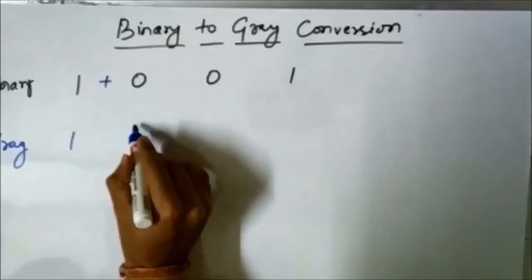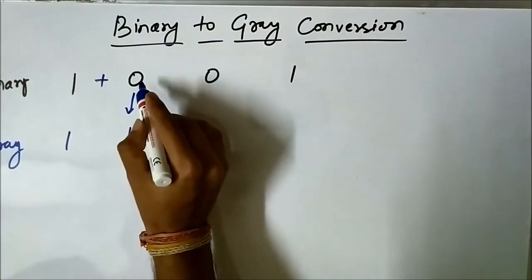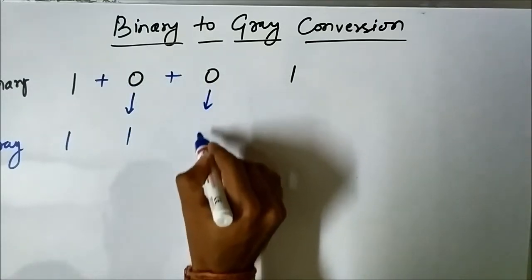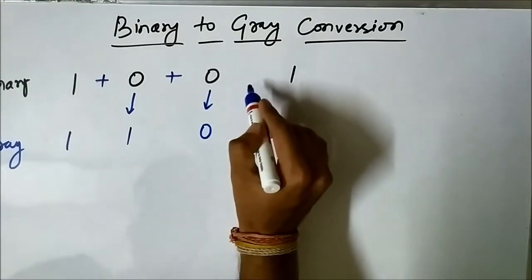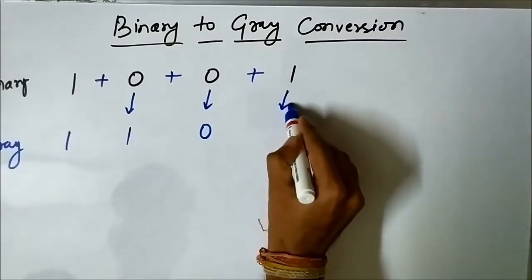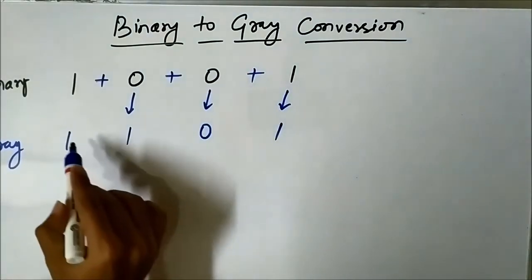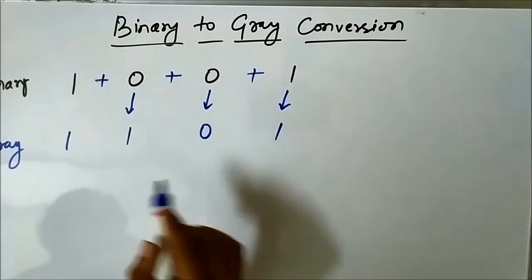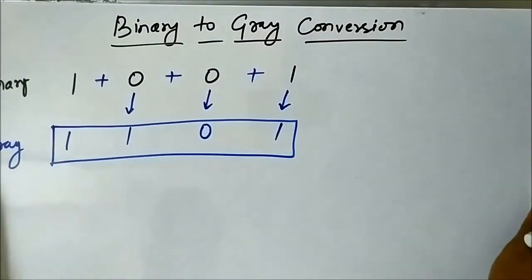Next we perform the addition of the next pair of bits: 1 plus 0, the result is 1. Then we perform the addition of the next two bits: 0 plus 0, the result is 0. Next, 0 plus 1 gives 1. So this is the required gray code: 1 1 0 1.